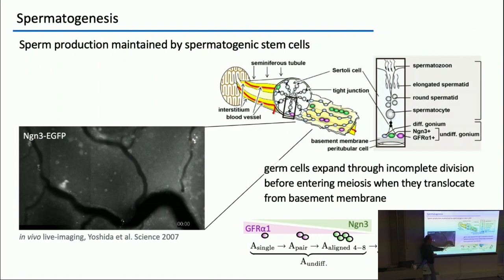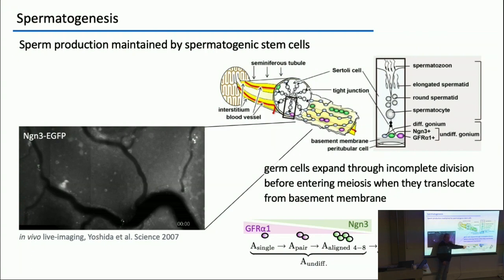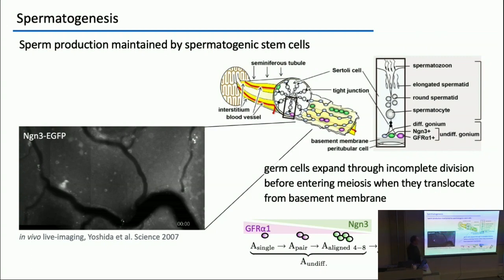The cells move through the adluminal compartments and they mature, eventually being released as mature sperm. What's slightly unusual about the germline system is that cell divisions are typically incomplete — telophase is incomplete — so progenies share interconnecting bridges and you generate chains of syncytia. In terms of markers, stem cells are enriched in the expression of GDNF receptor GFRA1, and commitment to differentiation is marked by upregulation of KIT.